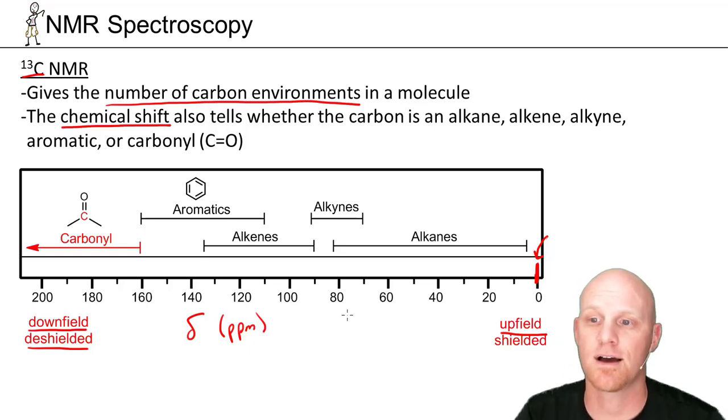So in this case, based on where a signal actually shows up in the chemical shift, we can figure out if it's an alkane carbon, an alkyne carbon, an alkene carbon, an aromatic carbon in a benzene ring, or a carbon double bonded to an oxygen, a carbonyl carbon. So that's the big deal here: number of carbon environments equals the number of signals and the chemical shift can tell us some details about what kind of environment that carbon atom is in.